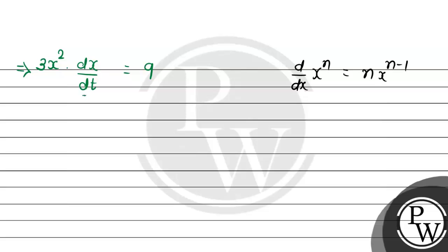So, solving for dx/dt — which represents the rate of change of the side length — we get dx/dt equals 9 divided by 3x squared, which simplifies to 3 upon x squared.